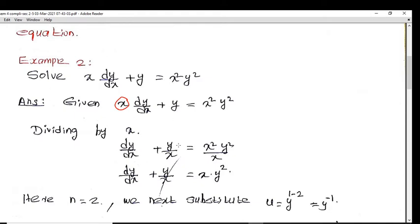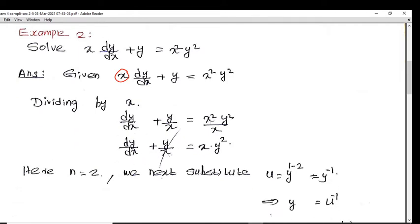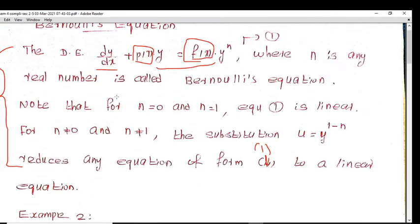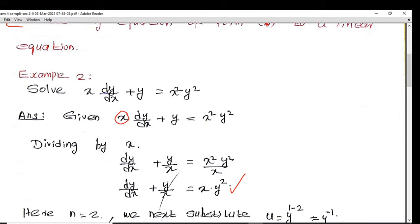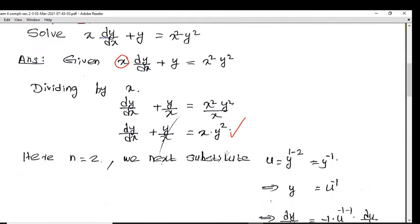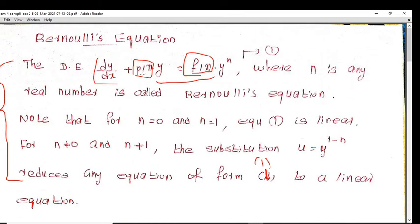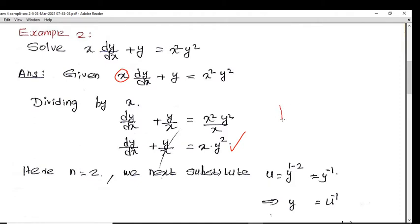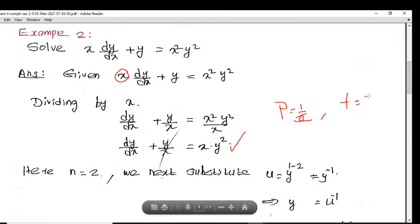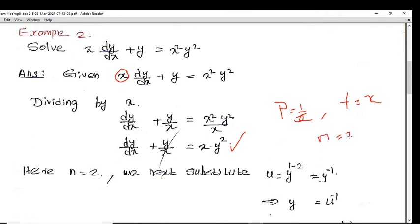We compare this to the standard Bernoulli form: dy/dx plus p(x)y equals f(x) y raised to n. Dividing through by x, we identify p(x) equals 1/x, f(x) equals x, and n equals 2.